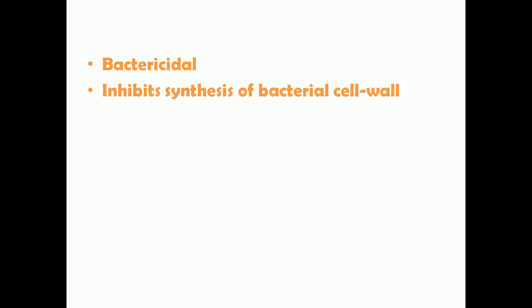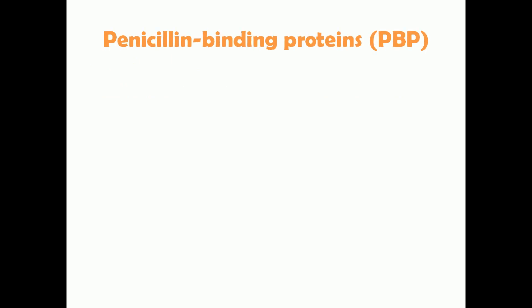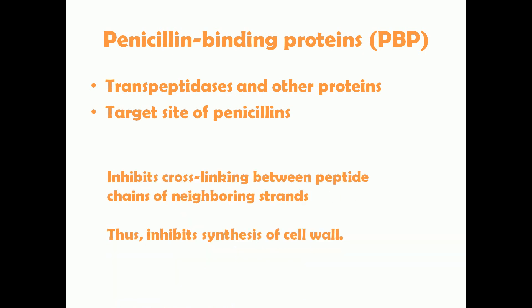Penicillins are bactericidal, meaning they kill bacteria. The mechanism of action is inhibition of bacterial cell wall synthesis. There are penicillin binding proteins, also known as PBPs, which include transpeptidases and other proteins. These are the target sites of penicillins. Transpeptidases are involved in cross-linking between peptide chains in the bacterial cell wall, maintaining its integrity. Penicillin binds to these proteins and inhibits that cross-linking, thereby inhibiting cell wall synthesis and killing the bacteria.